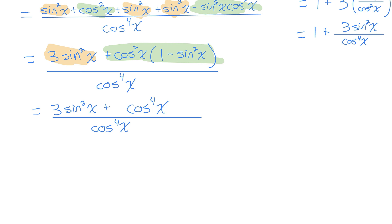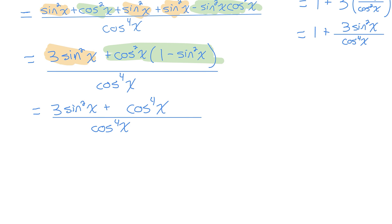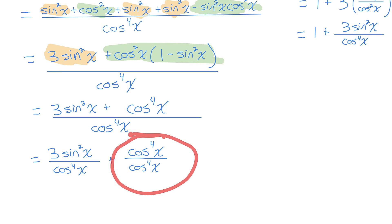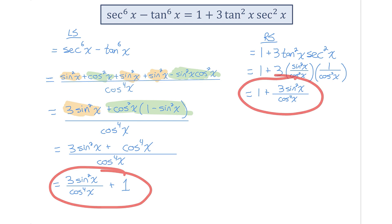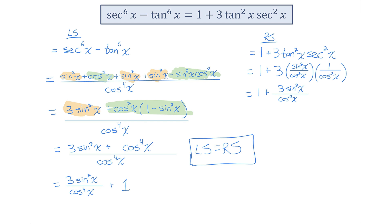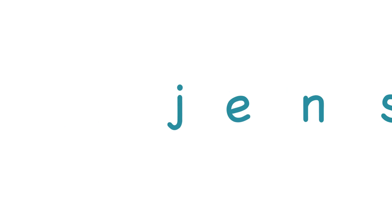I'll rewrite 1 minus sine squared as cos squared, and cos squared times cos squared as cos to the power of 4x. Separating this into two fractions: both terms in the numerator are divided by cosine to the power of 4x. Cos to the power of 4x divided by itself is 1. And there you have it — the left side of the equation equals the right side, so this equation is an identity, it's been proven. Make sure to let me know in the comments how you did on these identities. Did you find them difficult? Which ones did you get stuck on? And what series do you want to see me do next?